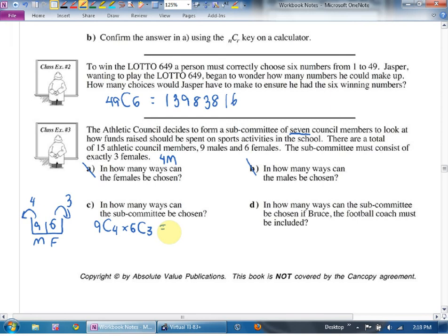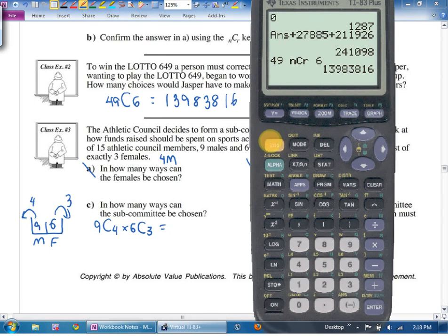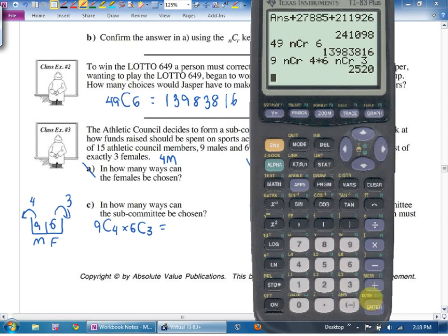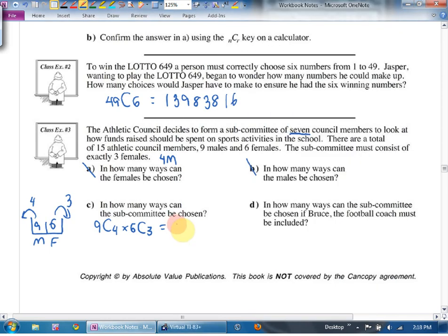I'm going to go second function enter, second function enter, second function enter. Delete nine. Choose four. Delete six. Choose three. That's still less typing, I think. 2520? Is it 2520? Yes. Okay. All right. Mini curveball number one. D. In how many ways can the subcommittee be chosen if Bruce, the football coach, must be included?